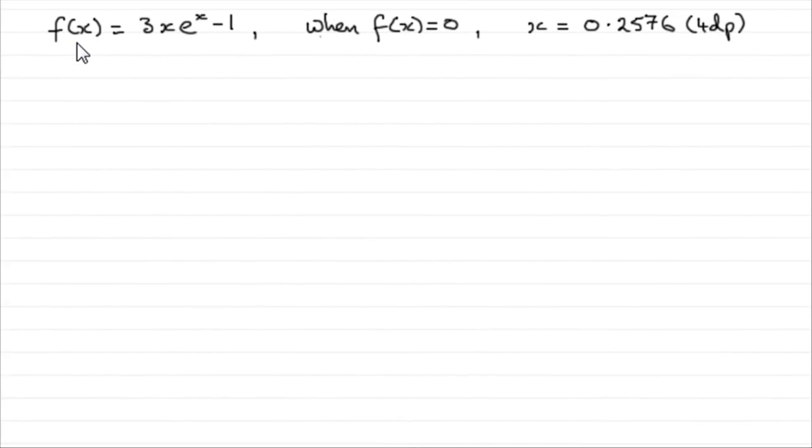Hi. Now, in this part of the question, we know that f(x) equals 3x e to the power x minus 1, and we're told that when f(x) equals 0, a root to this equation, that is a solution, a value of x, is apparently 0.2576 to 4 decimal places, but we've got to prove that it is this.